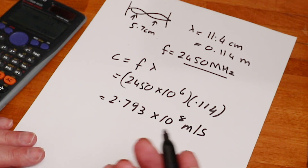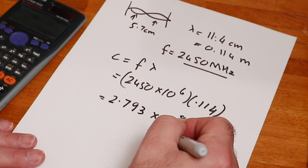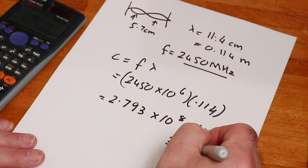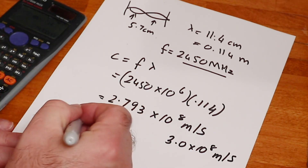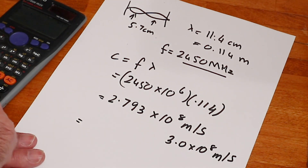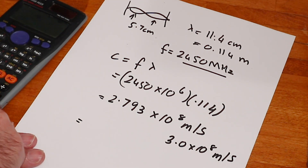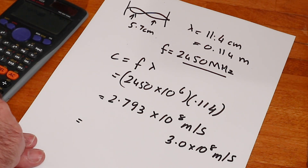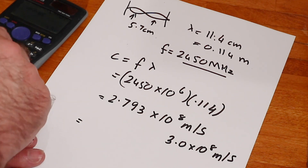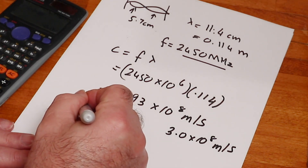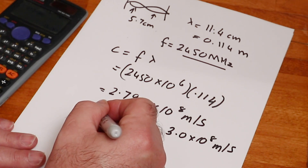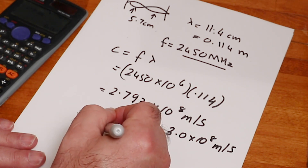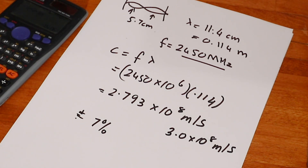We know that the speed of light is 3.0 × 10⁸ meters per second. If I work out the percentage error by subtracting 3 × 10⁸ and dividing by 3 × 10⁸, I get a value of approximately ±0.07, or in other words a 7% error. That's pretty good for determining the speed of light.